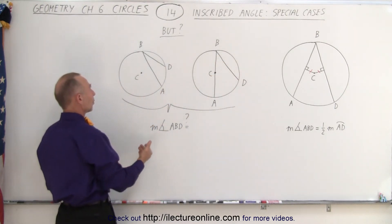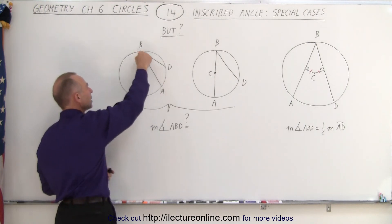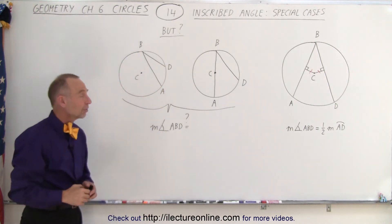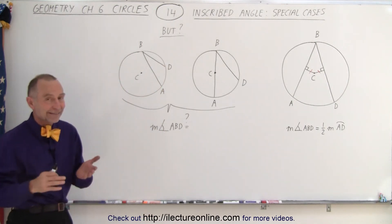And what if we have a case like this where we have the angle from A to B to D, is that angle measure equal to half the measure of the intercepted arc? And the answer is yes indeed.